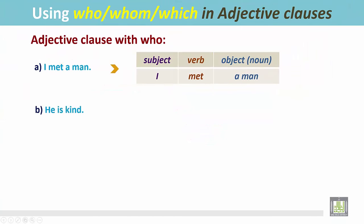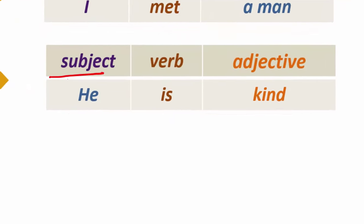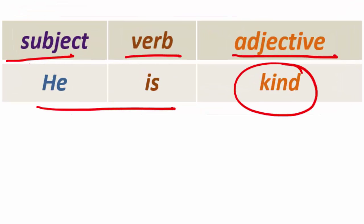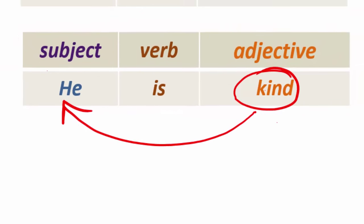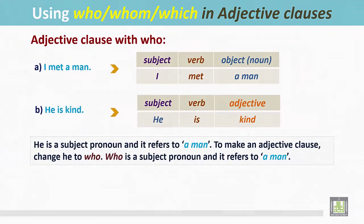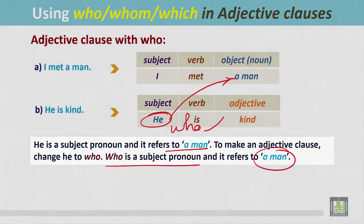Another sentence: he is kind. In this sentence, the structure is subject, verb, and adjective. He is kind — 'kind' is an adjective modifying the subject 'he'. He is a subject pronoun and it refers to 'a man'. To make an adjective clause, change 'he' to 'who'. Who is a subject pronoun and it refers to a man.